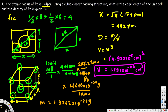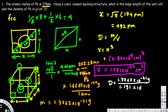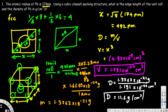Now we have both mass and volume, so we can find the density. Density = mass / volume = (1.3762 × 10⁻²¹ grams) / (1.191 × 10⁻²² cm³) = 11.6 grams per centimeter cubed. This is the density of Pb, and that's how we solve this kind of problem.